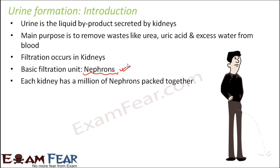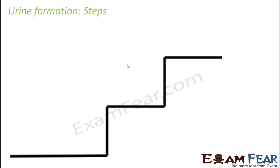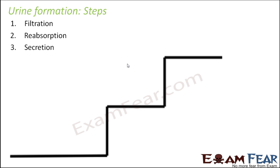Each kidney has a million nephrons packed together. Each nephron will be producing some urine, and all these urines together will come out of the kidney through the ureter and get stored in the urinary bladder. The process of urine formation takes place in three important steps: first is filtration, then reabsorption, and finally secretion. These are the three steps which together lead to the formation of urine.